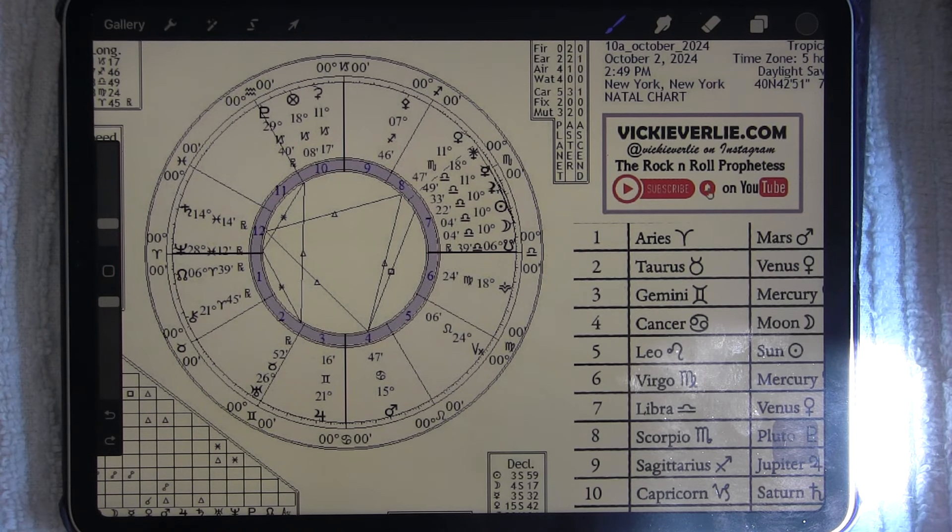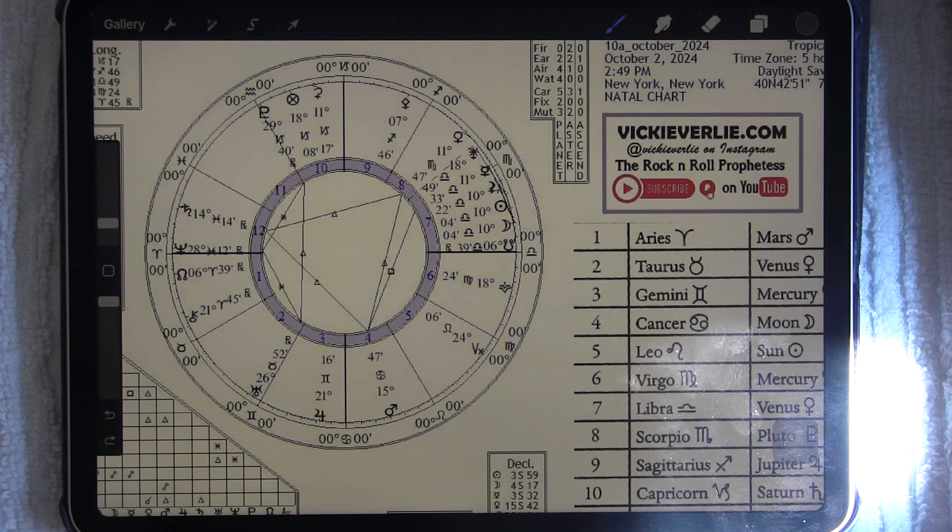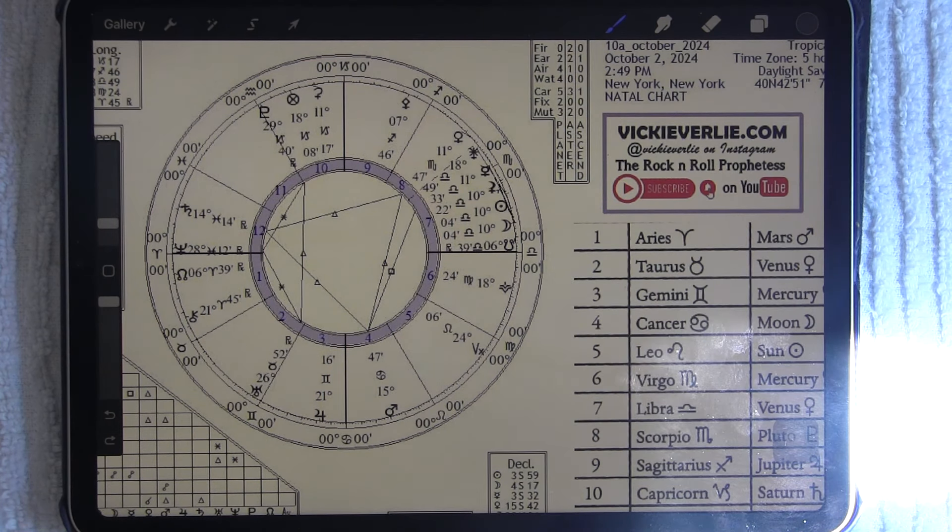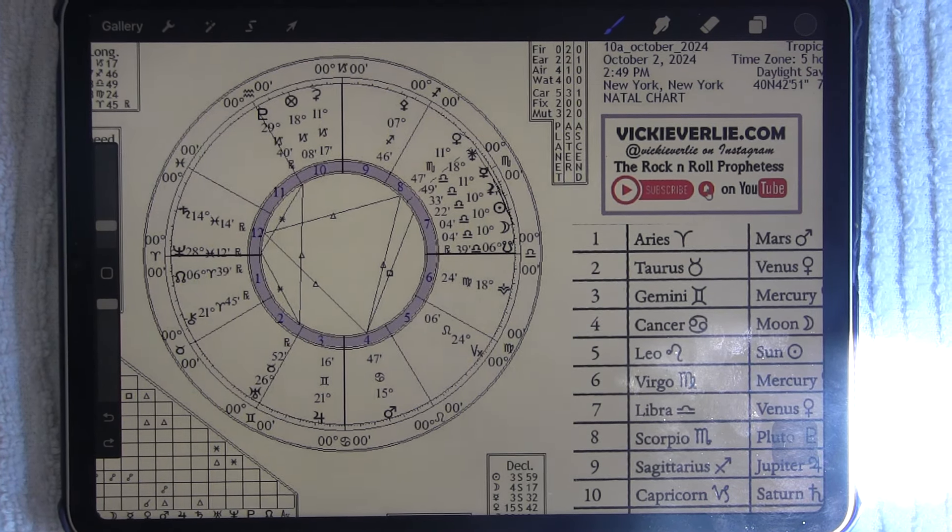All right, everybody, new moon, solar eclipse in Libra, finding balance, finding that harmony, finding the way forward. Powerful, powerful energy, the last of the Libra eclipses. What's been going on over the last couple of years, what we're going to release. Thanks for tuning in. Have a great day. Remember you are love and beauty incarnate and we'll talk again soon. Bye.